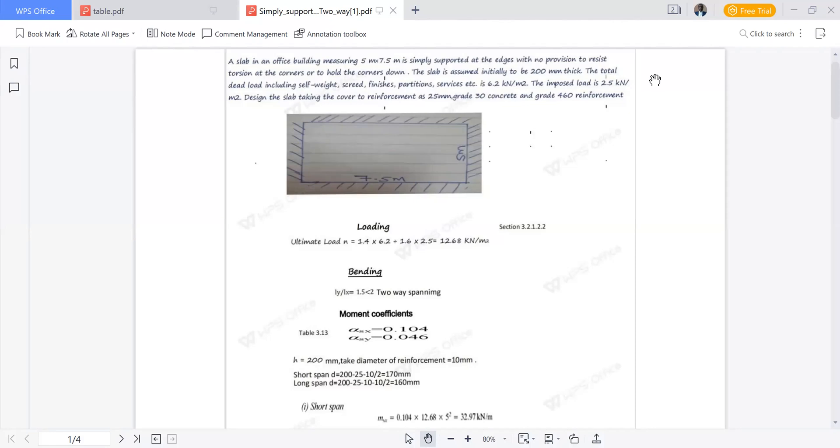The slab is assumed initially to be 200 mm thick. The total dead load including self-weight, screed, finishes, partition, services, etc is 6.2 kN per square meter. The imposed load is 2.5 kN per square meter. Design the slab taking the cover to reinforcement as 25 mm, grade 30 concrete and grade 460 reinforcement.